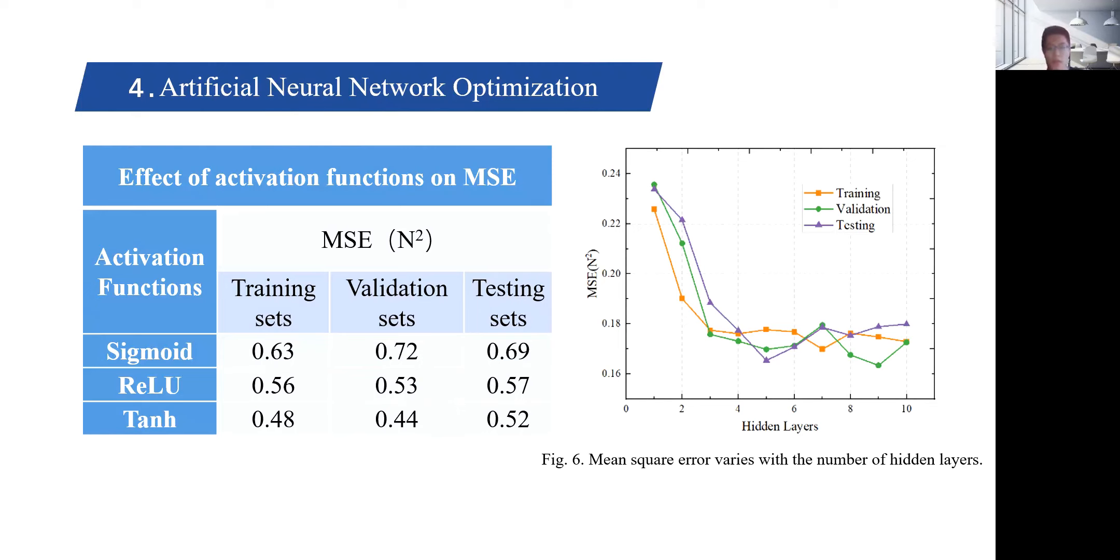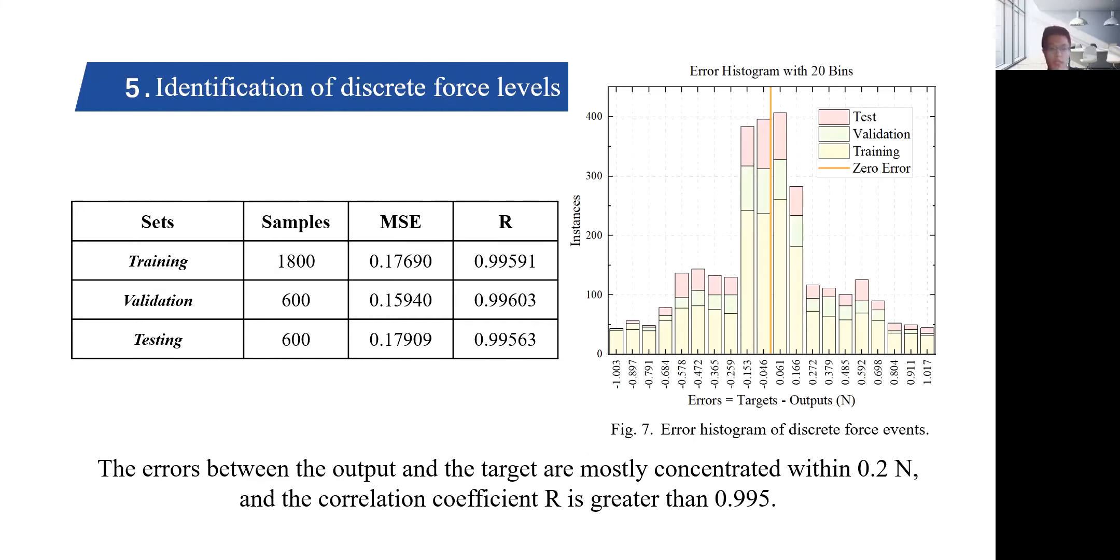In this case, when the hidden neural has 1 to 4 layers, the MSE decreases as the number of layers increases, and then fluctuates around the stable value. The more hidden layers, the more calculations, and the higher the time cost. So, we choose 5 layers of hidden neurons. In this case, the errors between the output and the target are mostly concentrated within 0.2 N, and the correlation coefficient r is greater than 0.95, which indicates that there is a good correlation between pulses and the corresponding stable values, and the fitting accuracy is relatively high.